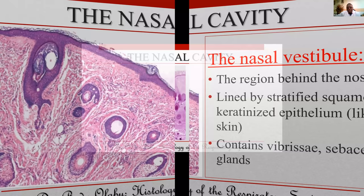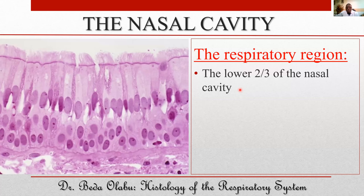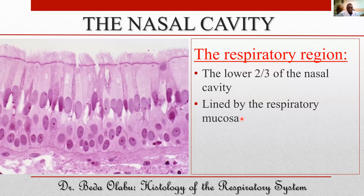The respiratory region of the nasal cavity is basically the lower two-thirds of the remaining nasal cavity after the vestibule. That region is lined by respiratory mucosa. This image shows us how the respiratory epithelium looks like.